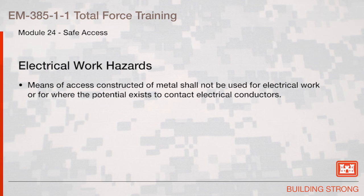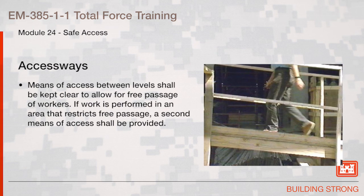Electrical work hazard: A means of access constructed of metal should not be used for electrical work where the potential exists to contact electrical conductors. Access ways shall be kept clear to allow free passage of workers. If work is performed in an area that restricts free passage, a second means of access shall be provided.